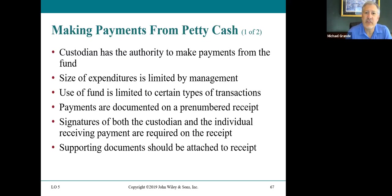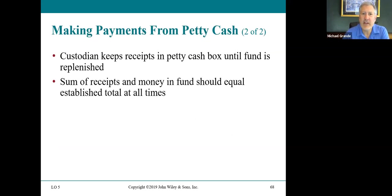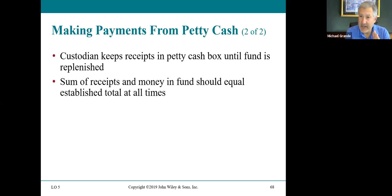Signatures of both the custodian and the individual receiving payment are required on pre-numbered receipts, and supporting documents should be attached. For example, if you order a pizza for $20 while working late, you pay from petty cash and keep the receipt. The custodian keeps receipts in the petty cash box until the fund is replenished. The key point: the sum of receipts and money in the fund should always equal the established total. At any point in time, if the fund was set up for $100, the combination of receipts and cash should always equal $100.